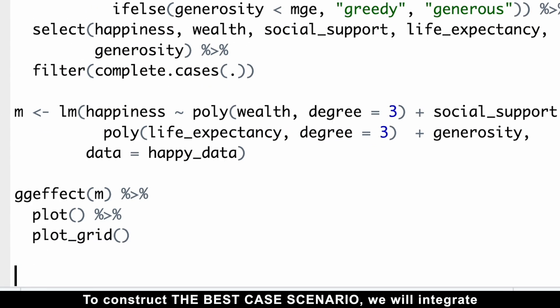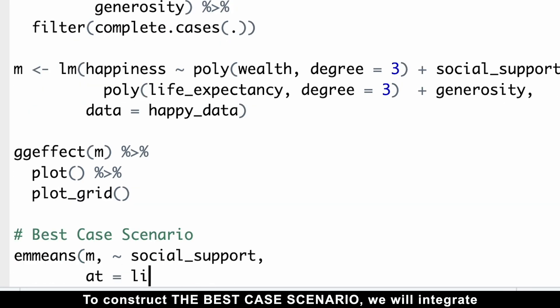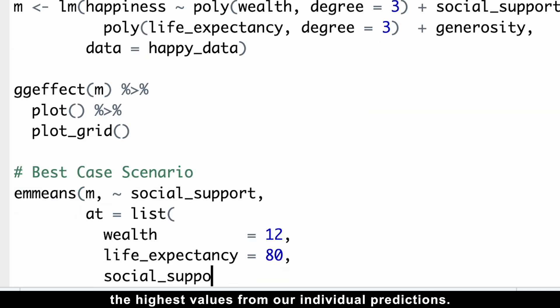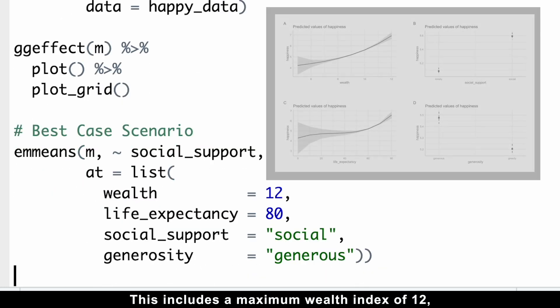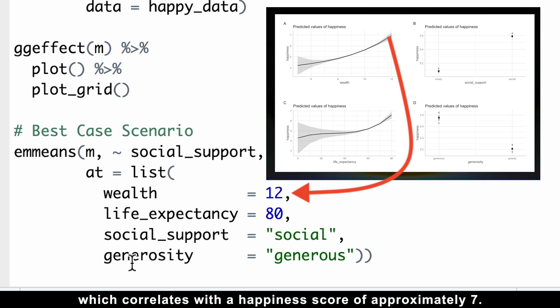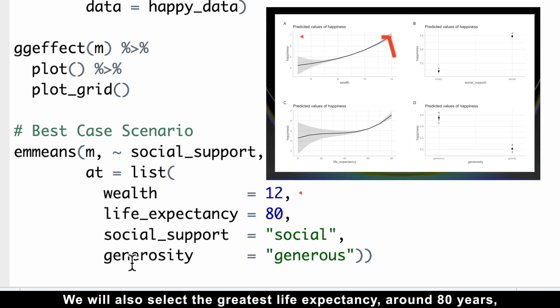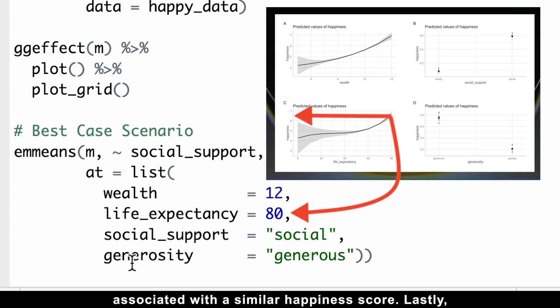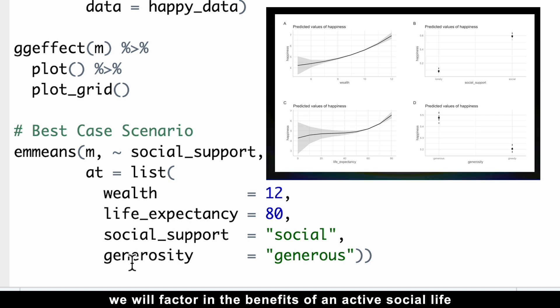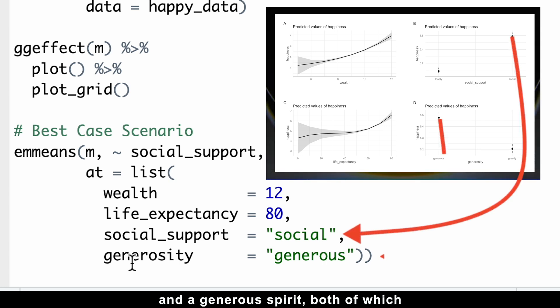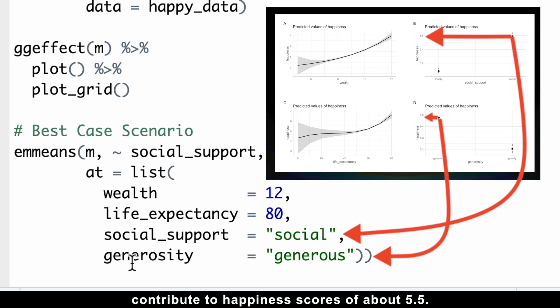To construct the best-case scenario, we will integrate the highest values from our individual predictions. This includes a maximum wealth index of 12, which correlates with the happiness score of approximately 7. We will also select the greatest life expectancy around 8 years associated with a similar happiness score. Lastly, we will factor in the benefits of an active social life and a generous spirit, both of which contribute to the happiness scores of about 5.5.